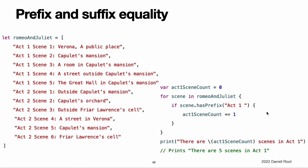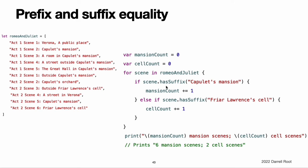The examples consider an array of strings representing the scene locations from the first two acts of Shakespeare's Romeo and Juliet. You can use the hasPrefix(_:) method with the Romeo and Juliet array to count the number of scenes in Act 1 of the play. Similarly, use the hasSuffix(_:) method to count the number of scenes that take place in or around Capulet's mansion and Friar Lawrence's cell. Note: the hasPrefix(_:) and hasSuffix(_:) methods perform a character-by-character canonical equivalence comparison between the extended grapheme clusters in each string, as described in string and character equality.